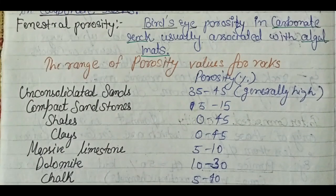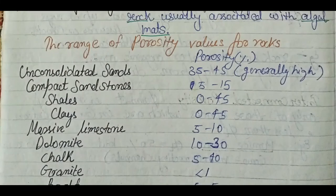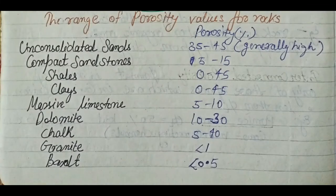There are typical ranges of porosity values for different rocks. Unconsolidated sand generally has high porosity; as rock becomes consolidated or compacted, porosity reduces as pore spaces become fewer. Shales have variable porosity; clays are variable; massive limestone has low porosity; dolomite ranges 10–30%; chalk is moderate; granite and basalt have very low porosity.